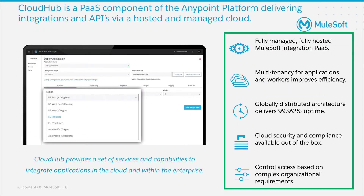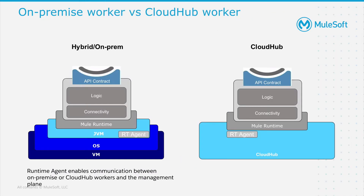CloudHub is our managed integration platform as a service, dedicated to running MuleSoft integrations and APIs, and is built on top of AWS infrastructure. CloudHub provides a multi-tenanted platform for applications across a globally distributed architecture with fault tolerance, isolation, and intelligent healing built in. Applications on CloudHub are run by one or more instances of Mule, and we call those workers.